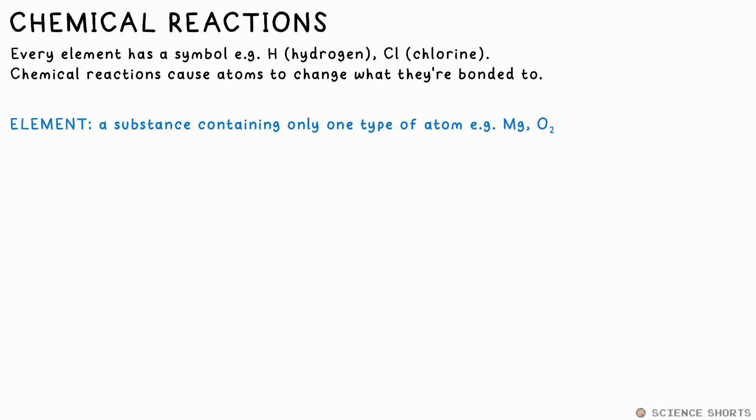Substances are made of atoms. The different types or elements of atoms are represented in the periodic table by symbols. A compound is a substance that contains two or more different types of atoms chemically bonded together. For example, the chemical formula for water is H2O. Every molecule of water is made of two hydrogen atoms and one oxygen atom. These atoms change what they're bonded to and how they're bonded through chemical reactions.